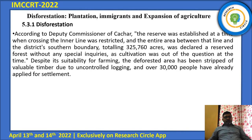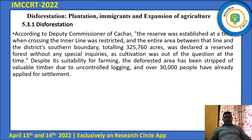According to the Department of Commission of the Kachar, the reserve was established at a time when crossing the inner line was restricted, and the entire area between the line and the district's southern boundary — totalling 325,760 acres — was declared as reserve forest without any special inquiries. Despite its suitability for farming, the deforested area has been stripped of valuable timber due to uncontrolled logging, and over 13,000 people have already applied for settlement.